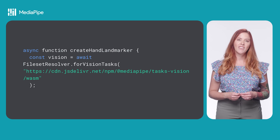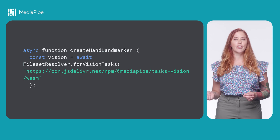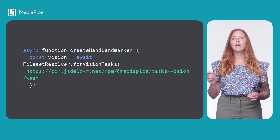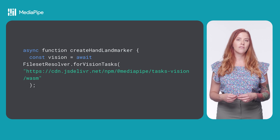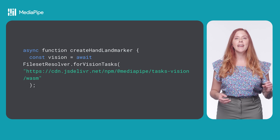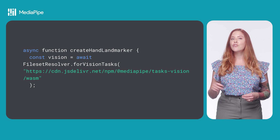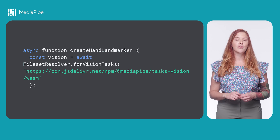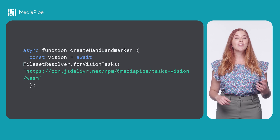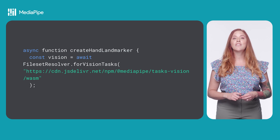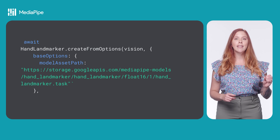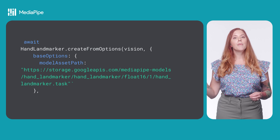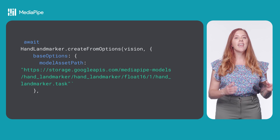Let's take a look at how to initialize the task using example code. Here we have a function, createHandLandMarker. First, we configure our WebAssembly binary loading using the FileSet resolver for VisionTasks method. WebAssembly, or WASM, is a binary instruction format for a stack-based VM. You don't need to be familiar with WASM to use MediaPipe solutions for the web — knowing that WASM allows non-web-based code to run on the web is enough. Then we create the Hand Landmark Detector using the HandLandmarker.createFromOptions method, passing the FileSet resolver you just created and the model.